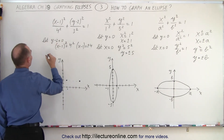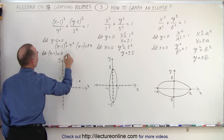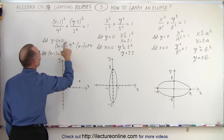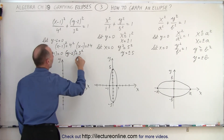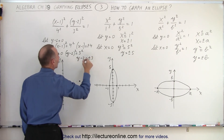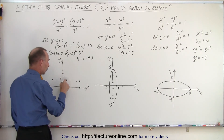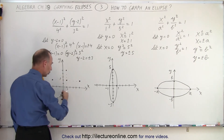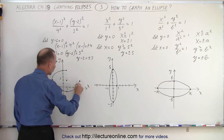We do the same for x − 1. Let x − 1 = 0. That means (y − 2)² = 3², so y − 2 = ±3. In other words, from the center location of the ellipse we go up 3 and place a dot, then down 3 and place another dot. When we connect those four dots, we have an ellipse that represents the equation on the board.